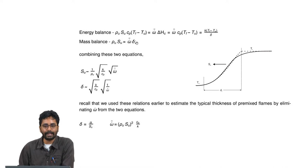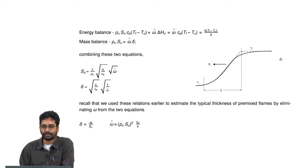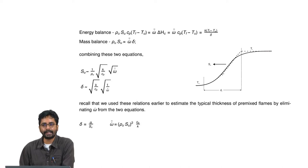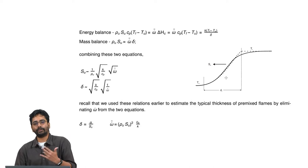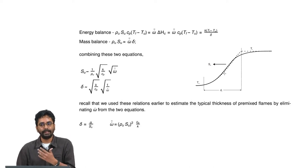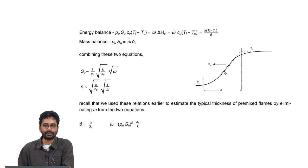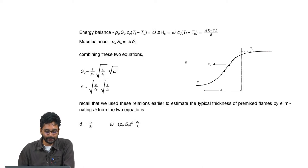The incoming mixture must be consumed in the reaction zone because the state to the right of the flame is a closed equilibrium state — the net chemical reaction rate is zero there. The reaction rate is such that all reactants are consumed: if stoichiometric, both fuel and oxidizer are consumed; if lean, all fuel is consumed; if rich, all oxidizer is consumed. The deficient reactant is consumed completely.